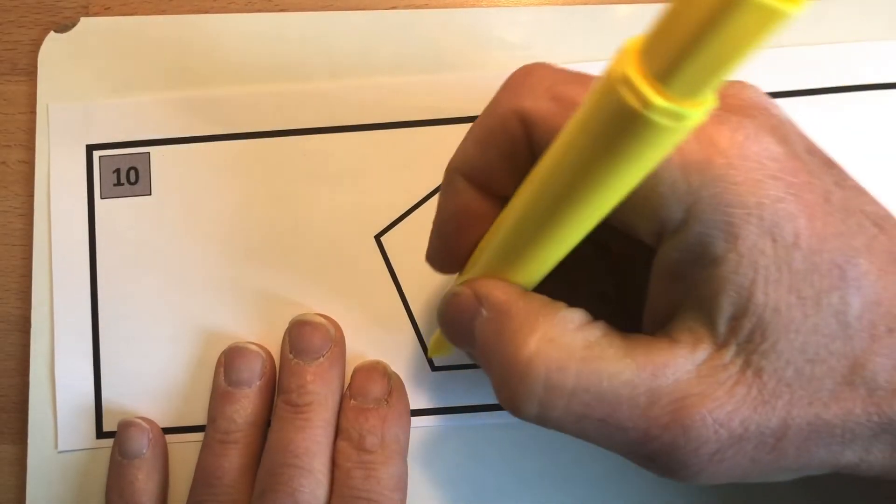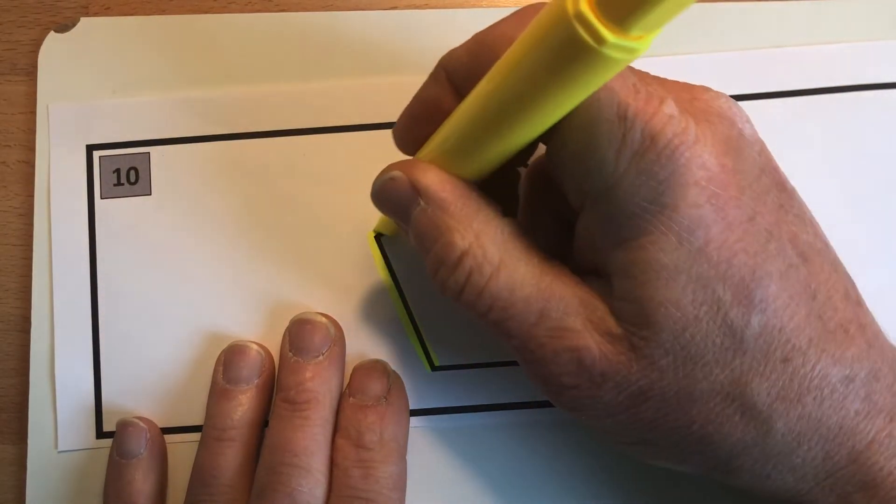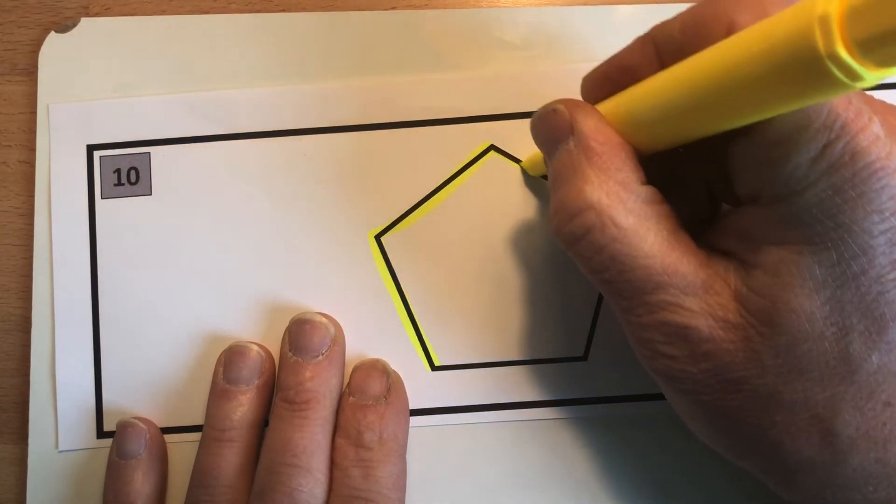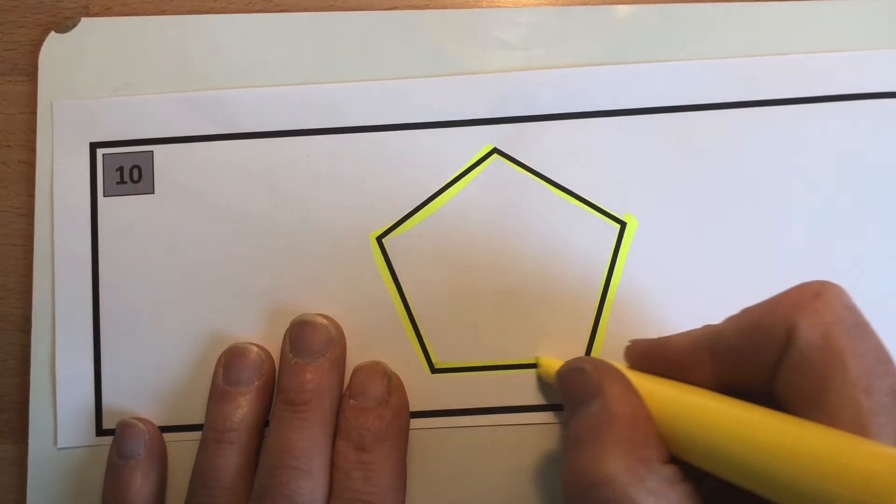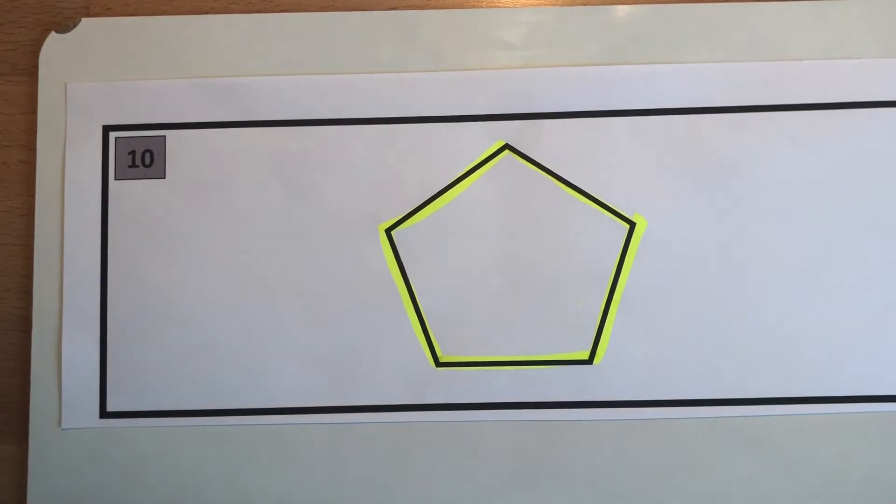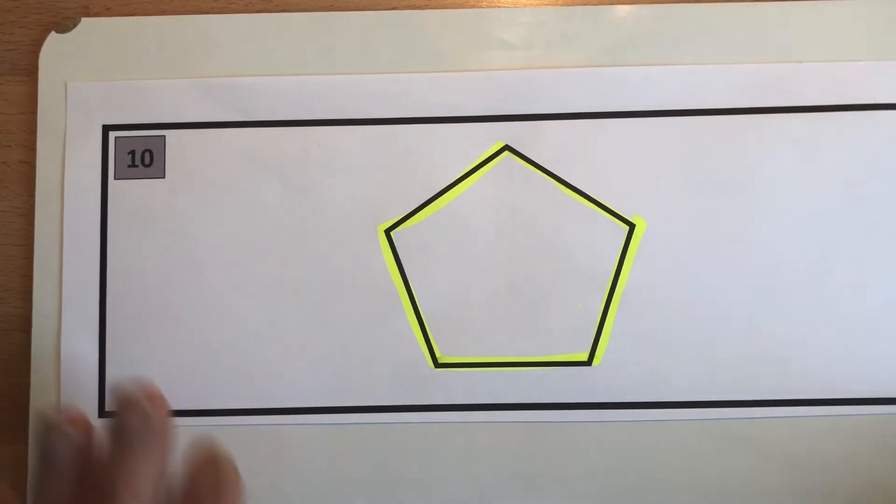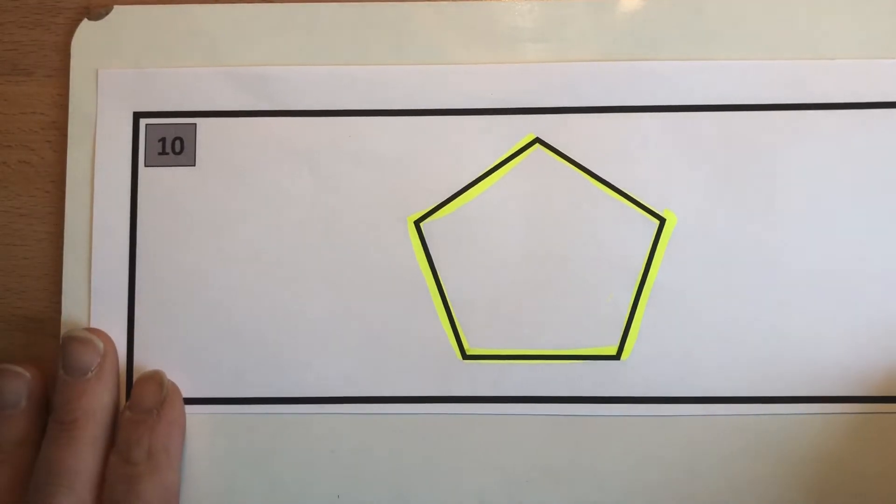You know the deal, teachers are gonna pause this in a few seconds here to let you draw and write down as many attributes about this shape as you can. First you want to name this shape and then you want to write down as many things that you can about this shape that are mathematical. You're looking for mathematical terminology. Teachers now pause.